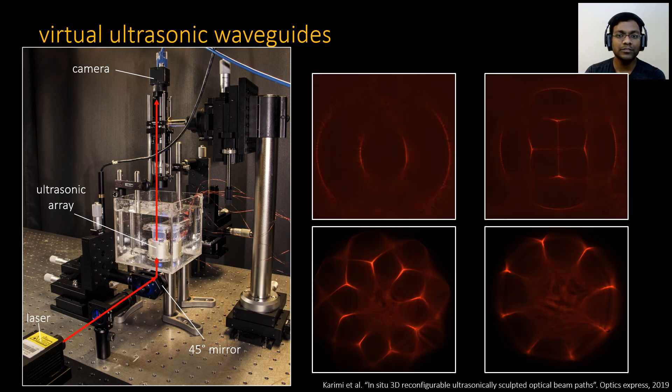By changing the parameters of the ultrasonic array, we can change the refractive index profile in the medium and create various caustic patterns. So we can think of this setup as a programmable refractive index field generator, and we can use our rendering algorithm to simulate measurements captured by this technique.